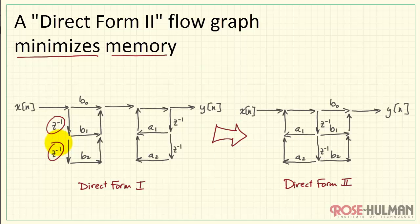For example, if we look at a Direct Form 1 implementation for n equals 2, we see a total of 4 delay elements. Now, as we'll see, the equivalent Direct Form 2 implementation has only two delay elements.